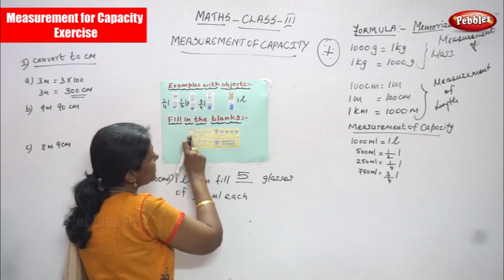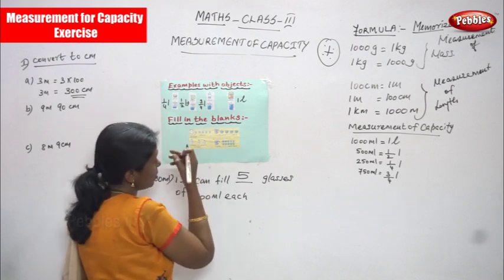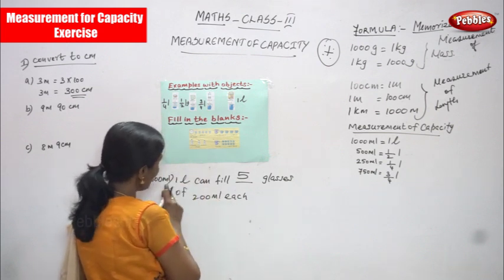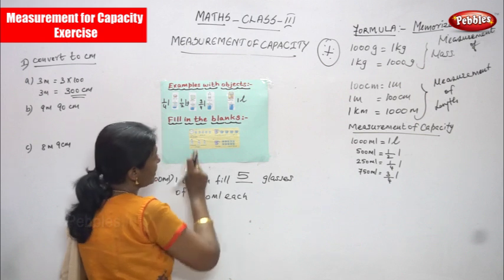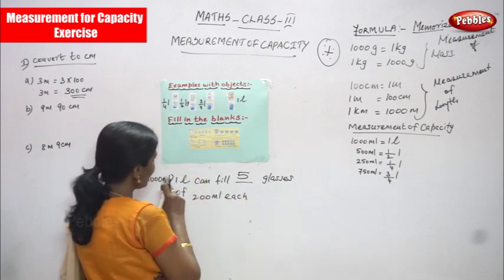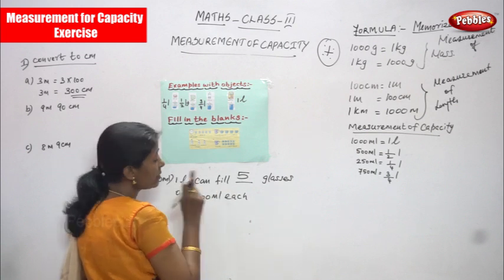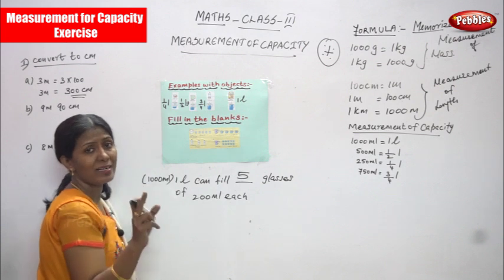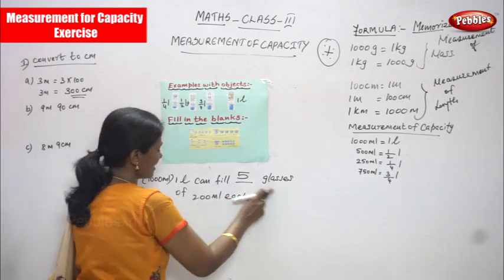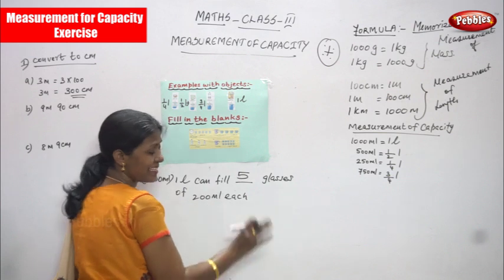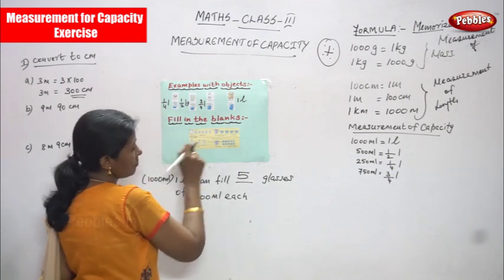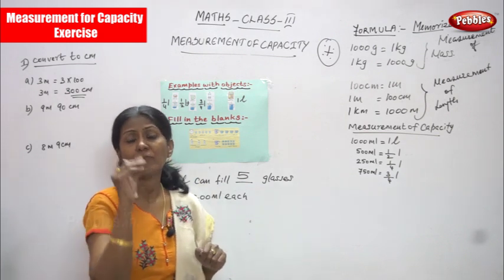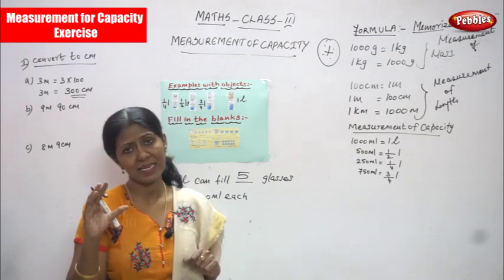This is 1000 ml — not 1000 liter, sorry — 1000 ml. 1000 ml is nothing but 1000 milliliter. 1000 ml you can call it as 1 liter. 1000 ml is equal to 1 liter. So 1 liter can fill 5 glasses of 200 ml each. That means each 200 ml of milk in the 5 glasses — that is the exact meaning.